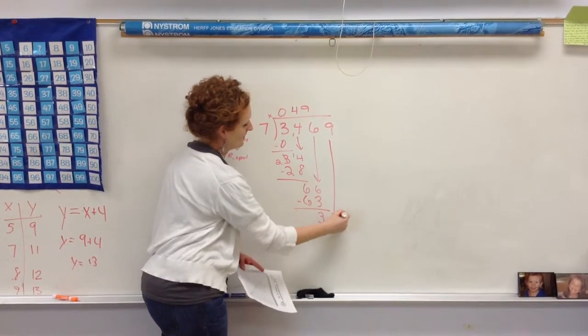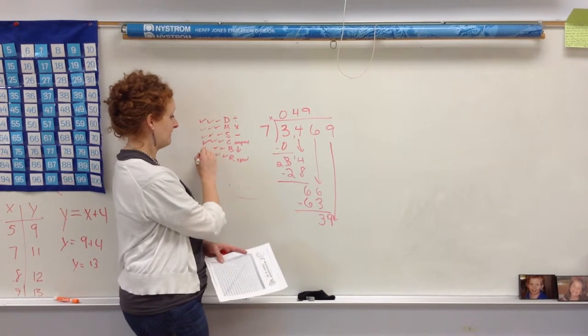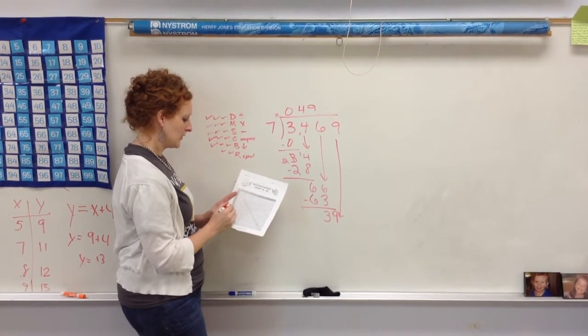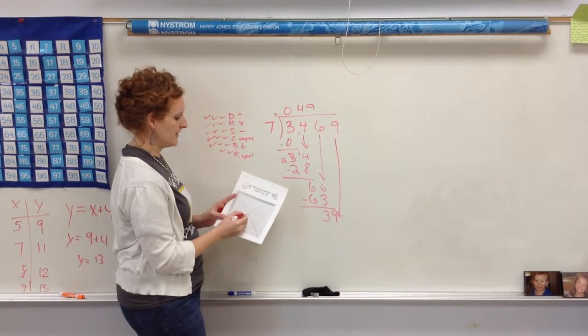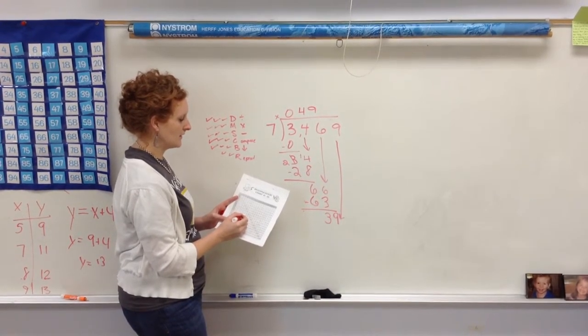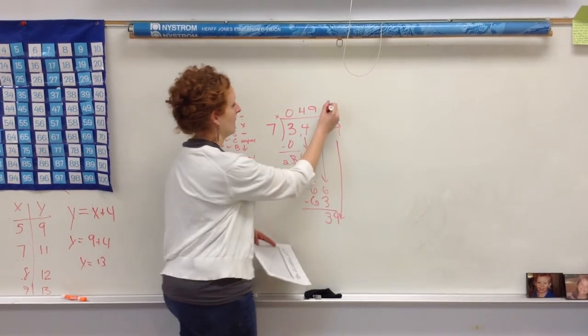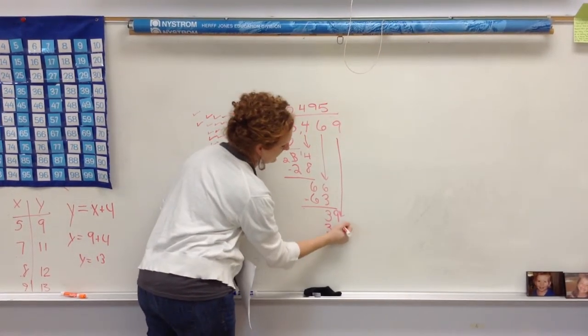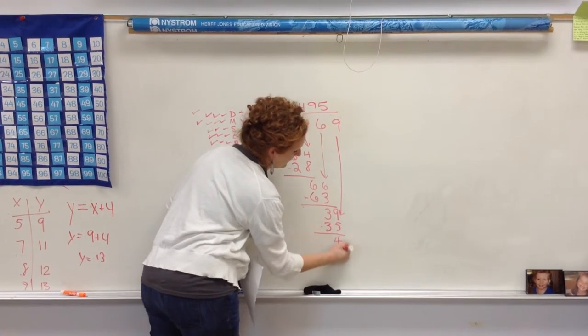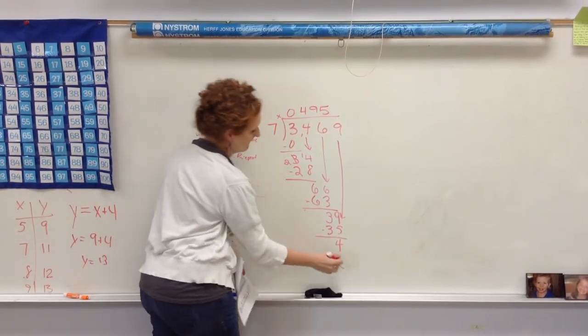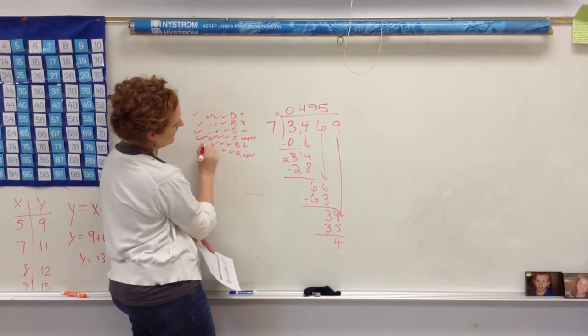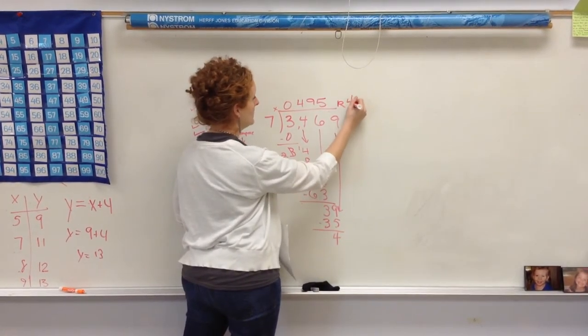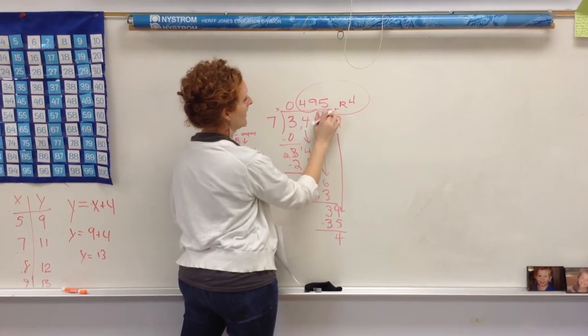And I have 39. So how many times does 7 go into 39? Again, I'm on my row of 7, and I go straight across 35, 42. That's too big, so I'm going to go back to the 35. 7 goes into 39 five times. So I've divided it. 5 times 7 for multiplying is 35. Subtracting it, that is 4. Compare. 4 is less than 7. I did great. So now for my repeat, I don't have any more numbers. That means this is my remainder. So my quotient is 495 with a remainder of 4.